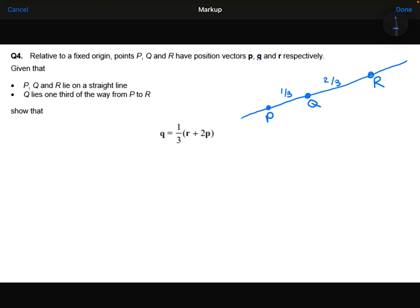Now, relative to the fixed origin O, I'm told that point P has the vector p, point Q has the vector q, and point R has the vector r.